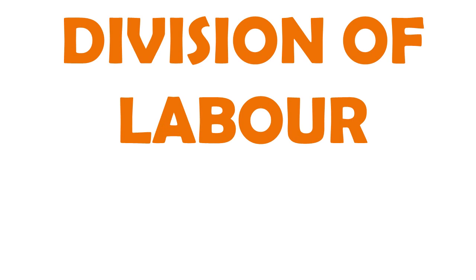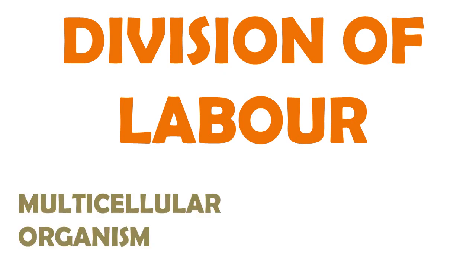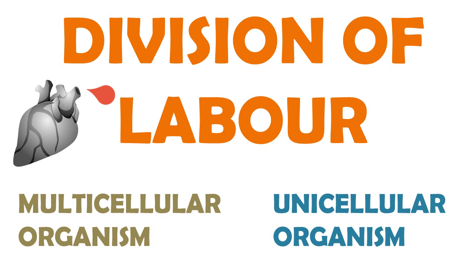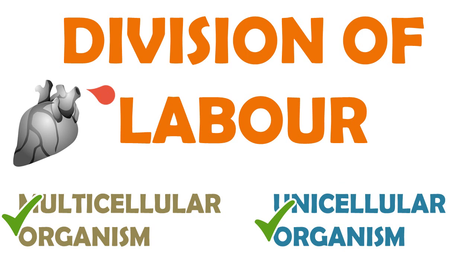All living cells carry out basic functions. We have multicellular organisms and unicellular organisms. In multicellular organisms, one group of cells performs one specific function — for example, in human beings, the stomach handles digestion and the heart pumps blood. In a unicellular organism, one single cell performs all functions.